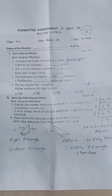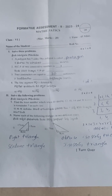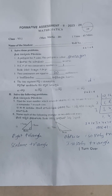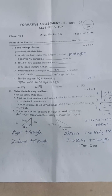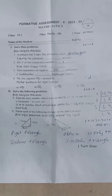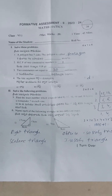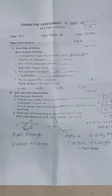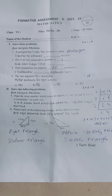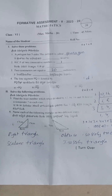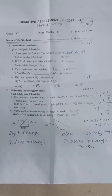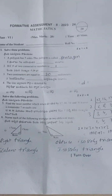Hi, welcome back to our YouTube channel. This is Balakrishna. Today we discuss Formative Assessment 2, 2023 to 2024, Class 6th Maths. First of all, if a polygon has five sides, then the polygon is called a pentagon.